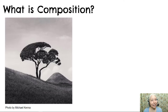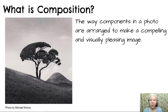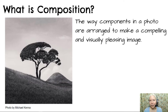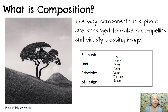Let's review what is composition. Composition is the way components in a photo are arranged to make a compelling and visually pleasing image. The components of the photo can be things like the subject matter — a hill in the foreground, a magnificent tree in the middle ground, another hill in the background, and the sky. But there are other components too, such as lighting. We use specialized vocabulary called the elements and principles of design.